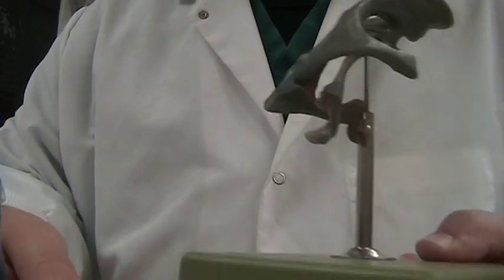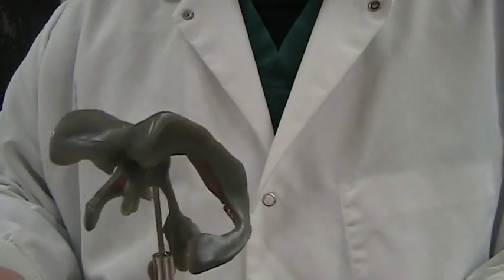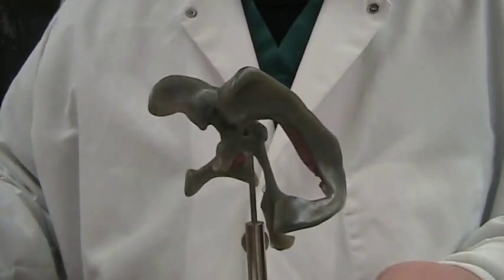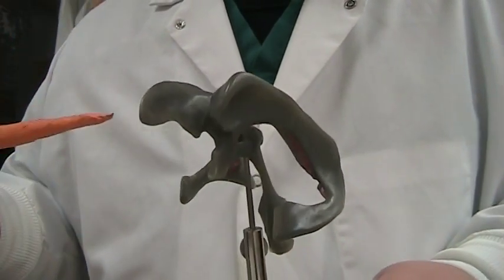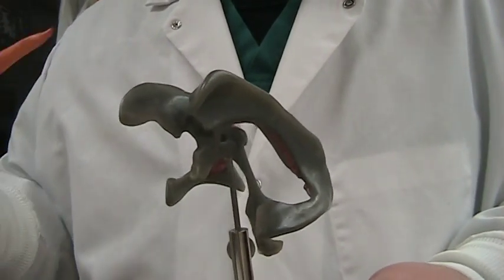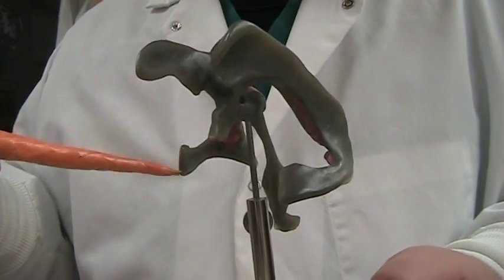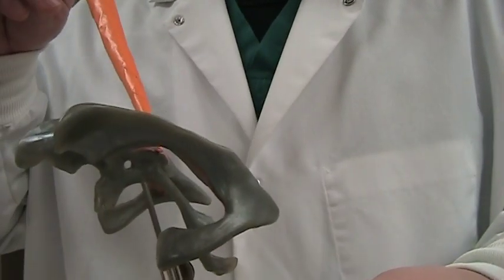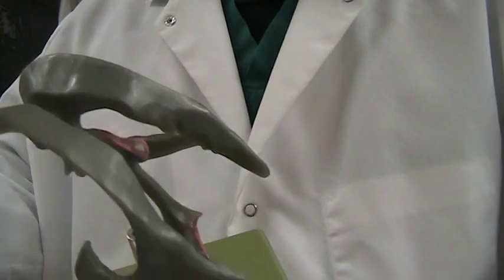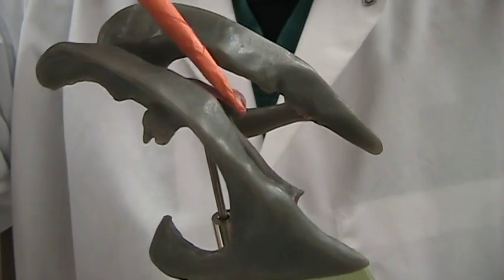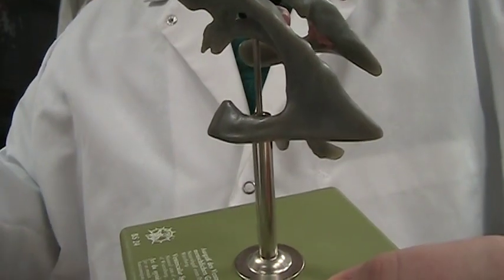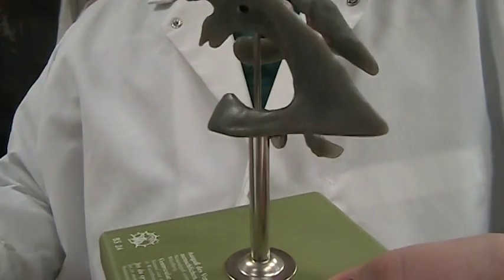Here's another model showing you the ventricles. This is a cast model of the ventricles. Remember, ventricles line with ependymal cells. Choroid plexus, referenced on this model as this pink, is basically ependymal cells with capillary beds that produces cerebrospinal fluid.